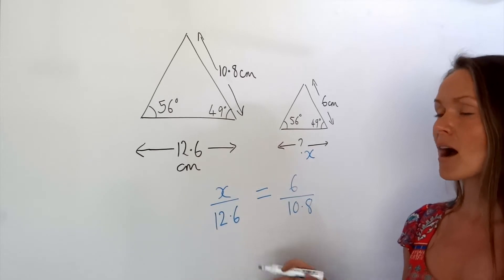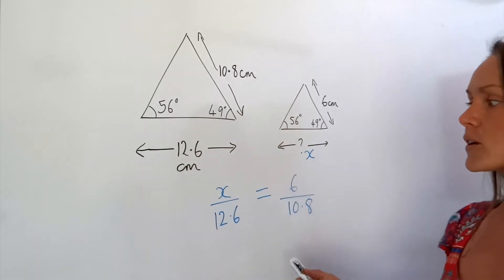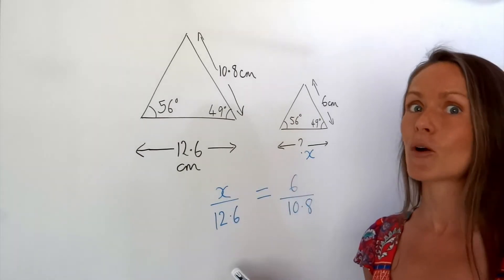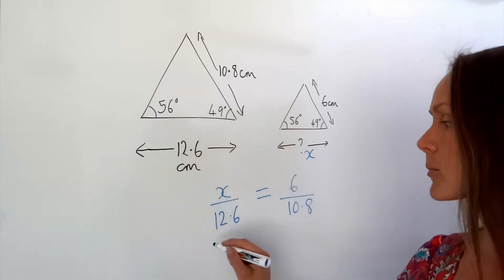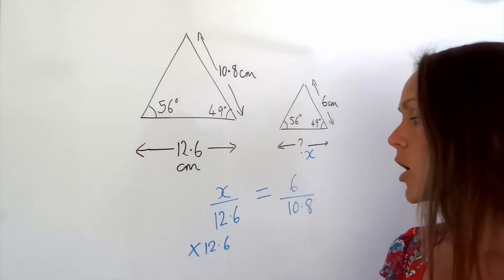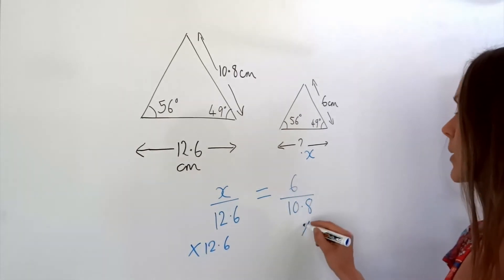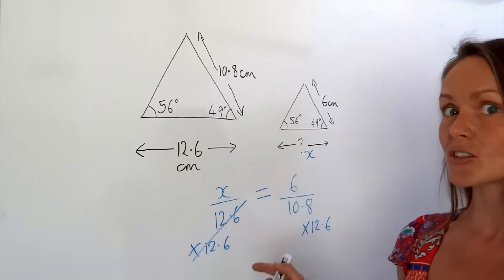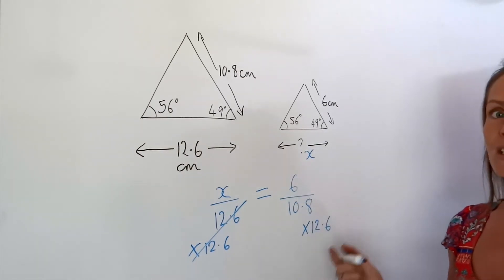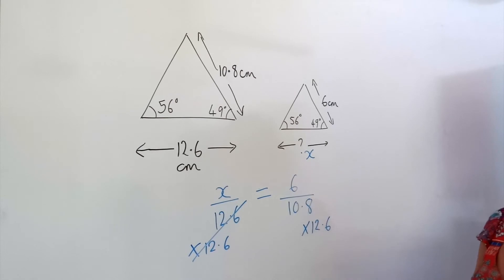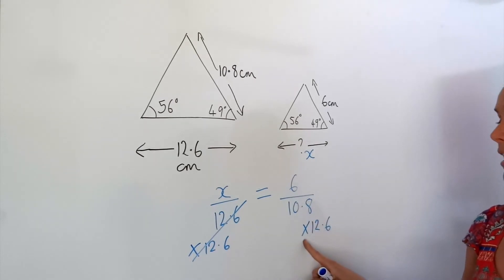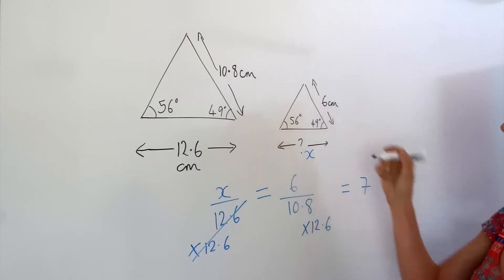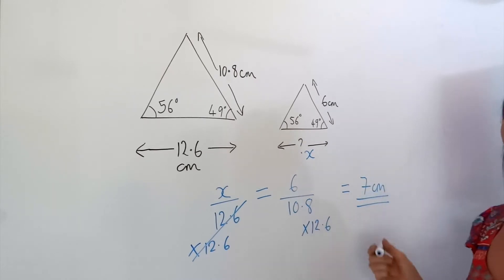Now that I've formed an equation, I can solve this to find X. X is currently being divided by 12.6, so we need to do the opposite — multiply by 12.6. Remember to do the same thing to both sides of the equation. On the left-hand side, they just cancel. On the right-hand side, put that into your calculator: type in the fraction 6 over 10.8, then multiply that fraction by 12.6, and it should give you 7. Remember the units are centimetres, so we've found the missing base.